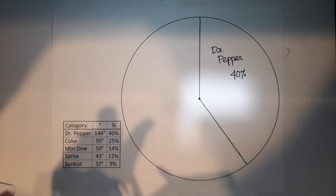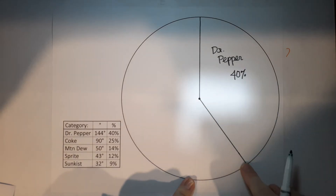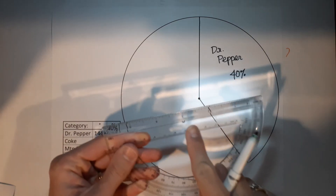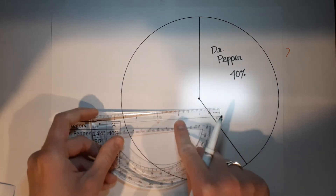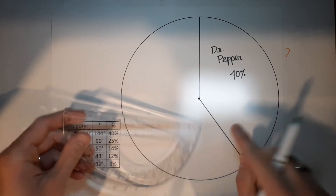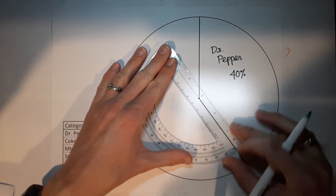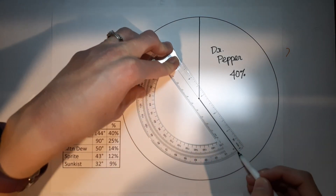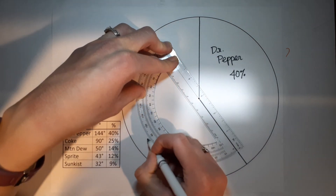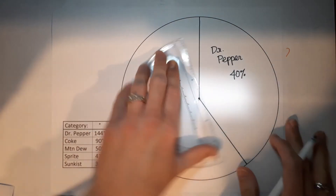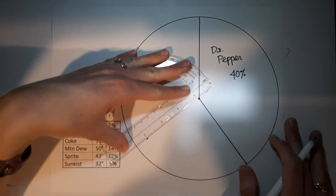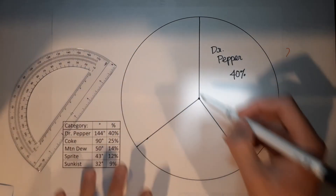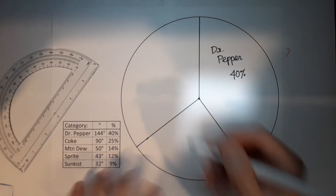Coke is next at 90 degrees. My new starting line is where the Dr Pepper slice ended. Line up the protractor zero with that line, hole at center, and measure to 90 degrees — which is dead center on the protractor. Make a mark and draw the line. That is my Coke slice — 25%.